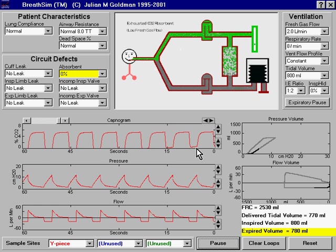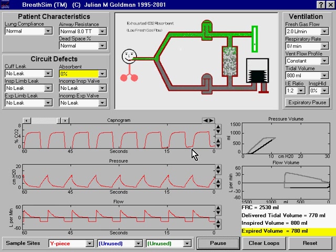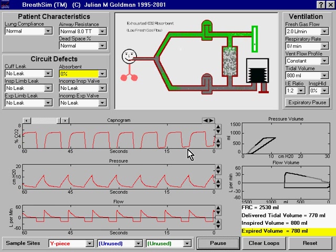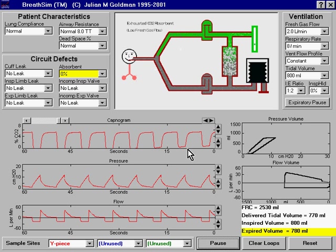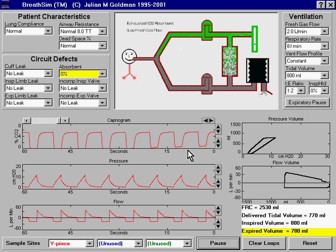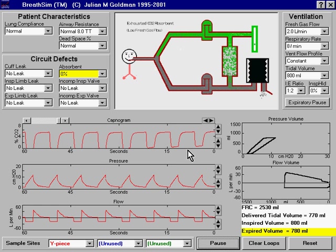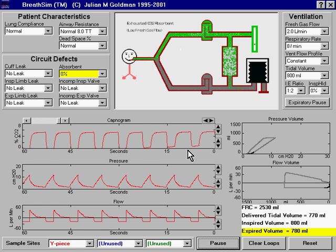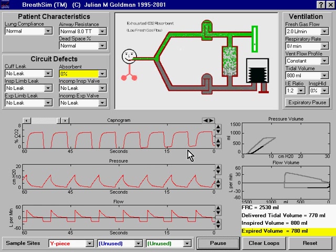Initially, the elevation of the inspiratory portion is apparent as it rises above zero. After a short time, the re-breathing of CO2 will also result in an increase in the expiratory portion of the capnogram, or an increase in end-tidal CO2.